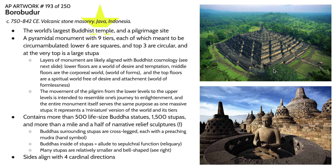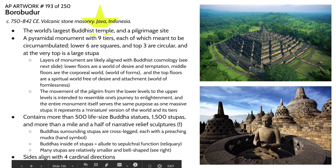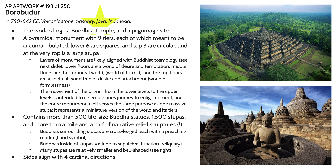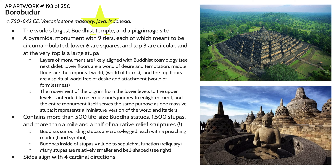This particular monument contains more than 500 life-size Buddha statues, 1,500 stupas of varying size, and more than a mile and a half of narrative relief sculptures along the corridors as one makes their way to the top. Volcanic stone is not particularly easy to shape, so this is really impressive. The Buddhas surrounding or enclosed within the stupas are cross-legged with preaching mudras, and each is slightly different. The Buddhas inside the stupas also allude to the sepulchral function of the stupa itself — to be a reliquary for the body of the Buddha. Many of the stupas are relatively smaller and bell-shaped. It's like one giant stupa with more stupas on top.